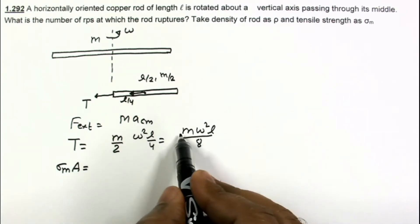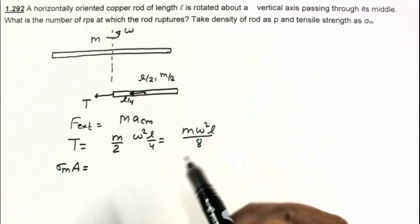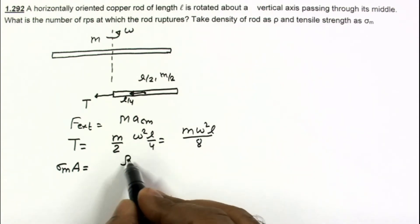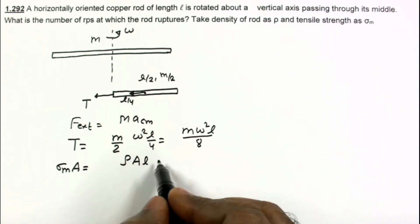m is not given directly, so we have to use the density of the rod. m can be written as density multiplied by volume. So this is cross section area A multiplied by the length l, and rest terms are ω²l/8.